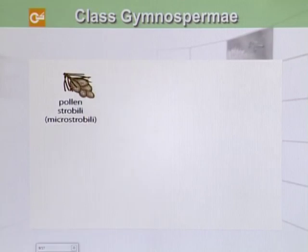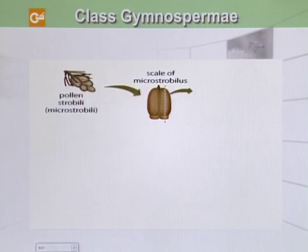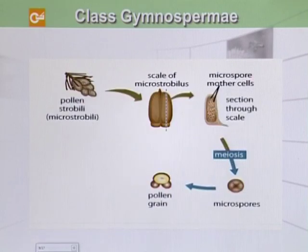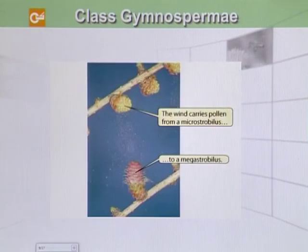Similarly, in the pollen strobili, also called micro strobili, we can see the scale of micro strobili which has a microspore mother cell. Meiosis occurs and microspores are produced. These microspores then form pollen grains, and the wind carries the pollen from the micro strobili to the mega strobili.